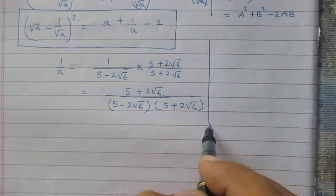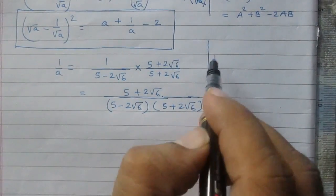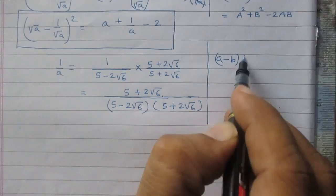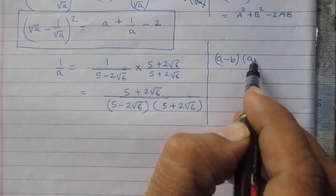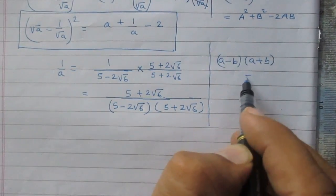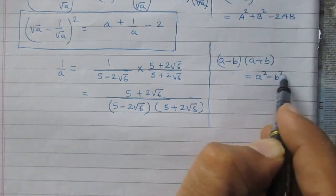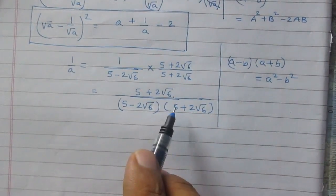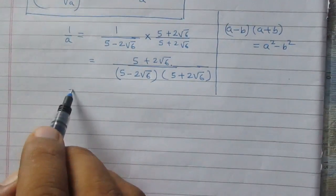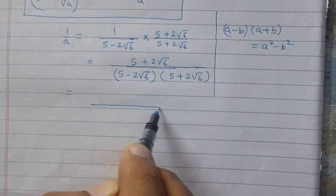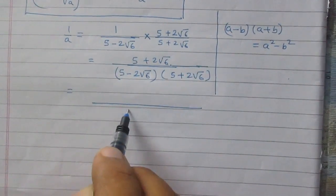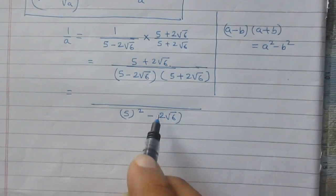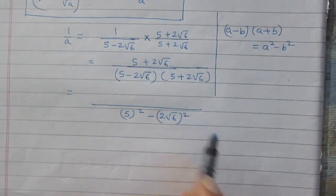To simplify the denominator, we use the identity: a minus b multiplied by a plus b is equal to a square minus b square. Using this identity, the denominator becomes 5 squared minus twice of square root 6, whole squared.